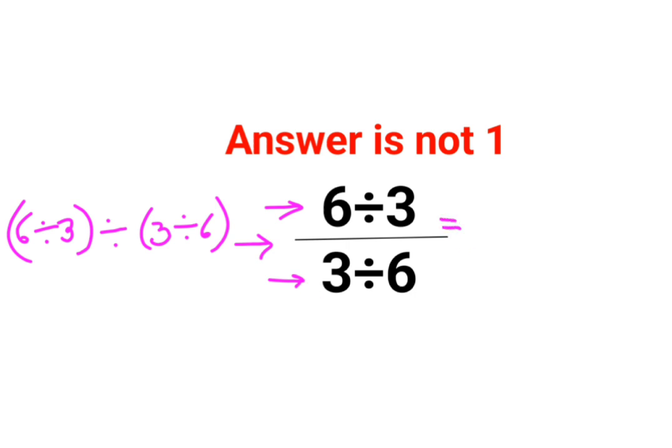So we know that 6 divided by 3 is what? 2 divided by, and the denominator is what? 3 divided by 6 which is 1 upon 2.